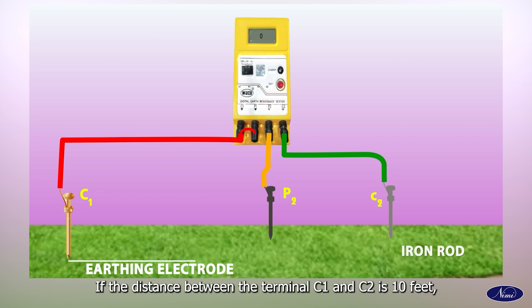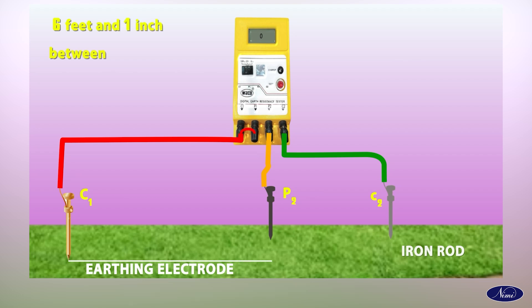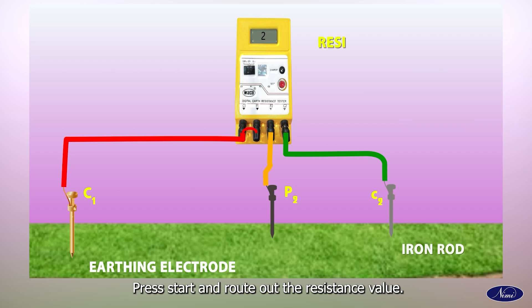If the distance between the terminals C1 and C2 is 10 feet, then fix the distance as 6 feet and 1 inch between the terminals P2 and C2. Press start and read out the resistance value. This is the actual value of the ground electrode under test.